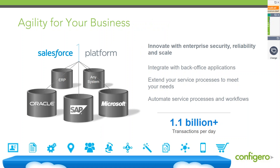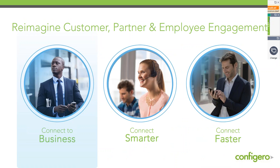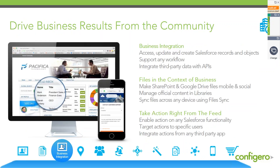This platform has innovated the enterprise and allowed people to scale. The Community Cloud sits on top of this rich platform, enabling out-of-the-box capabilities. From a business perspective, you can drive results through the community by integrating your workflows, integrating third-party applications through their APIs, making SharePoint and Google files available, synchronizing files across multiple devices, and giving the business the ability to take action on information coming through the Chatter feeds and communicate through that to move things through the process much faster.